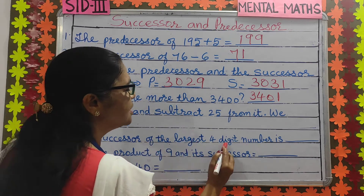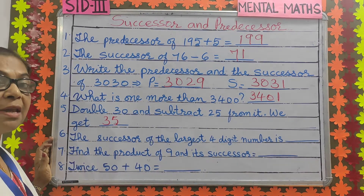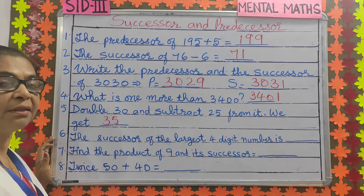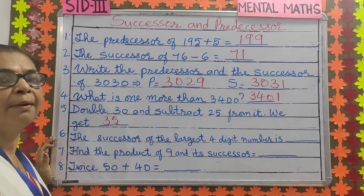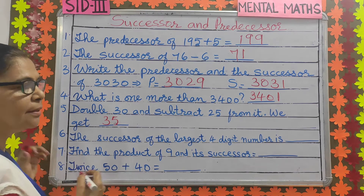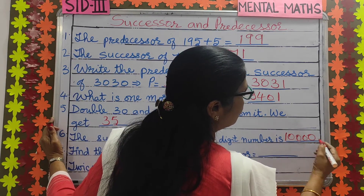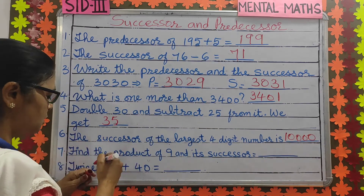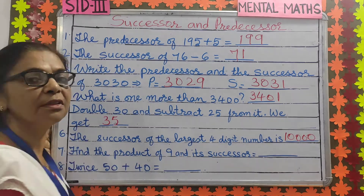Number 6: the successor of the largest 4-digit number. What is the largest 4-digit number? 9999. So 9999 plus 1 is 10,000 — that is 1 followed by 4 zeros. So the successor of the largest 4-digit number is 10,000.